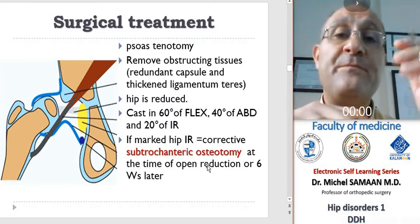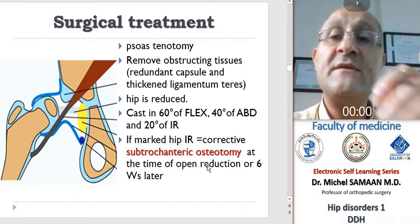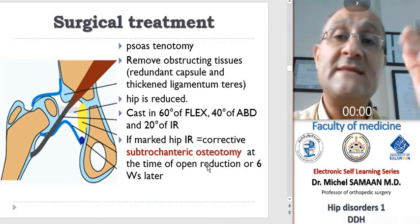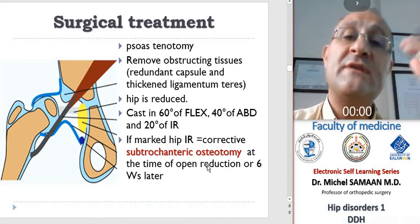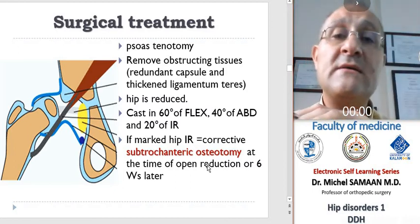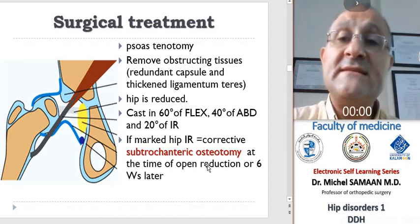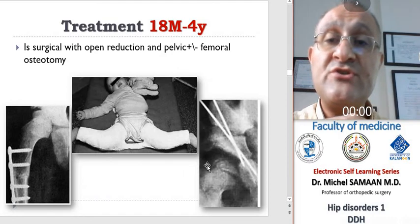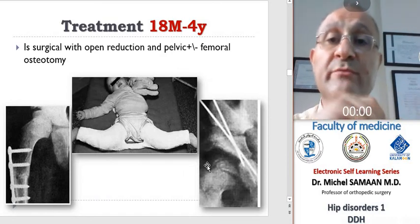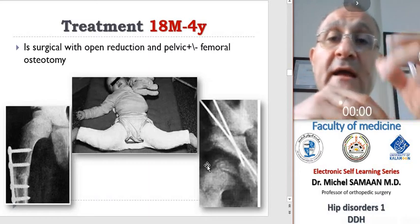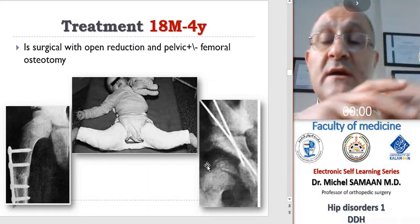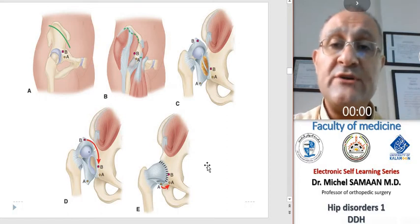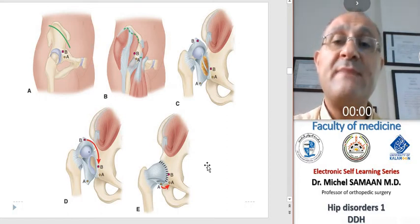Splintage of the concentrically reduced head is done by a spica cast at 60 degrees of flexion, 40 degrees of abduction, and 20 degrees of internal rotation. After 6 weeks we change the spica cast and continue up to 3 months, always testing stability of the hip. We have a safe zone of flexion and abduction — we must avoid extreme maximal abduction because it predisposes to avascular necrosis. If concentric reduction cannot be achieved, we should perform open reduction: the psoas tendon is divided, obstructing tissues such as redundant capsule, thickened ligamentum teres, and hypertrophic fat pad are removed, and the hip is reduced into the socket.